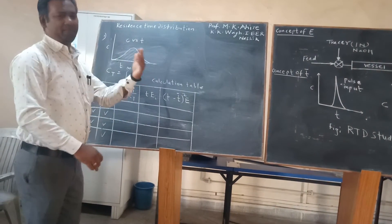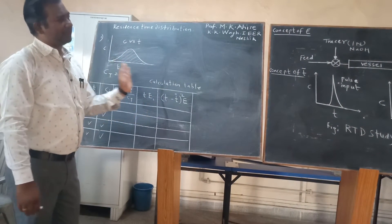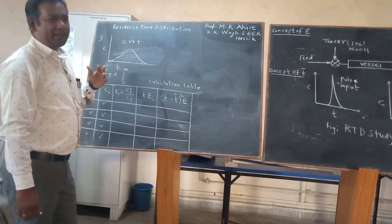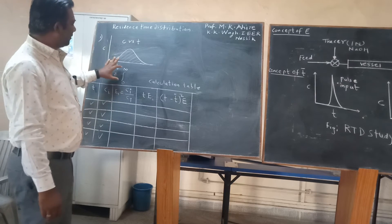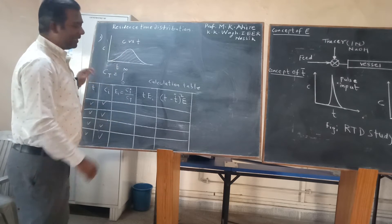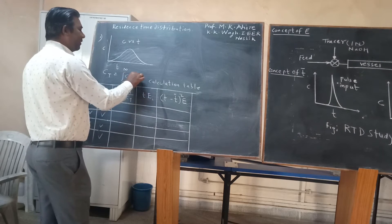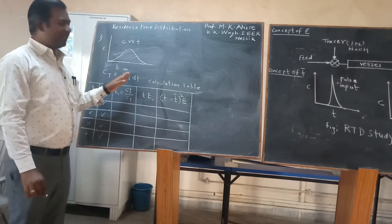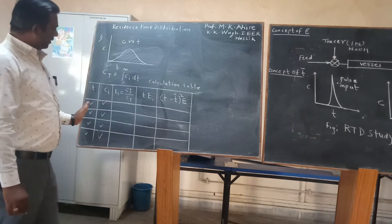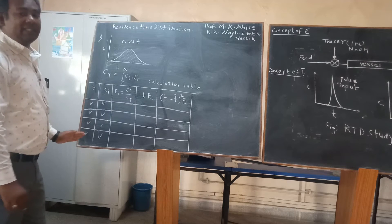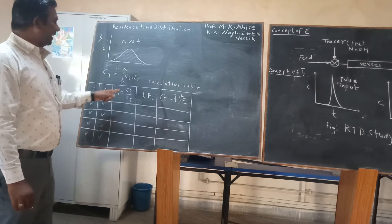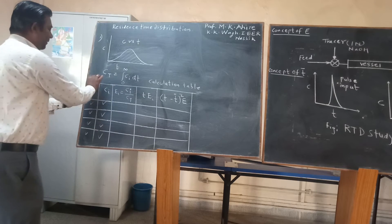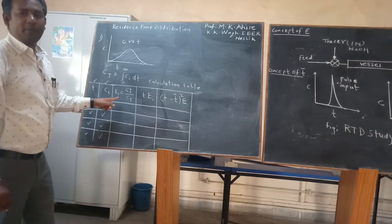Infinity means more time — you have given more time for the effluent to come out. Let's say you have recorded 30 to 40 readings. So from 0 to infinity, integrating C(t) dt gives Ct, where Ct is the individual concentration integrated over time. After finding the Ct value using the time and concentration columns, we come to the third column: exit age, E.